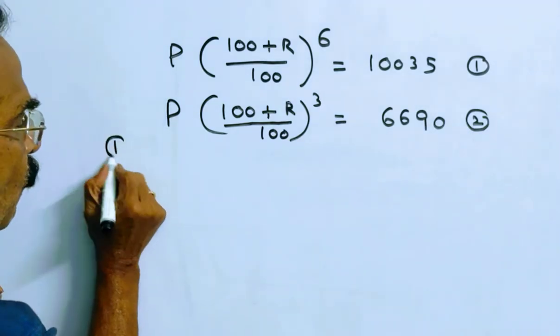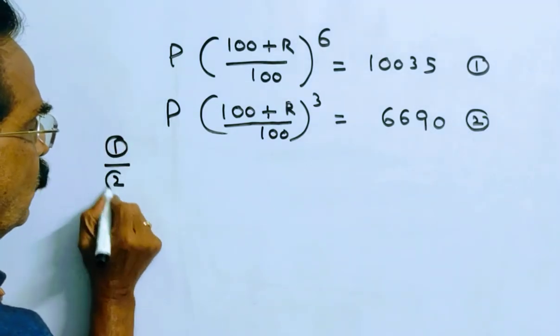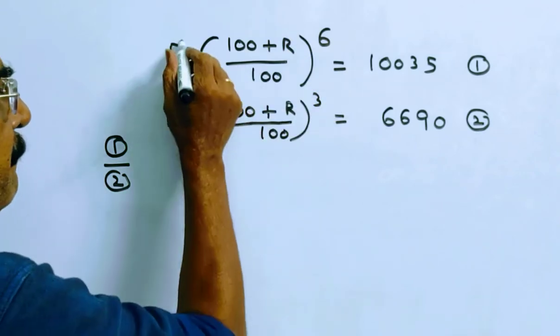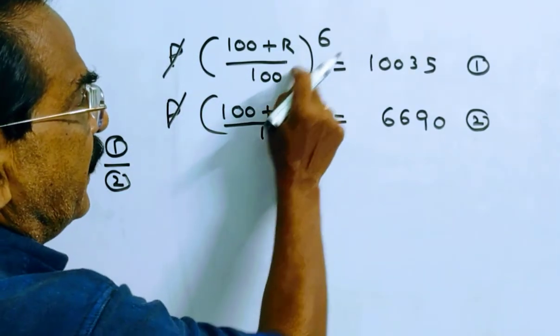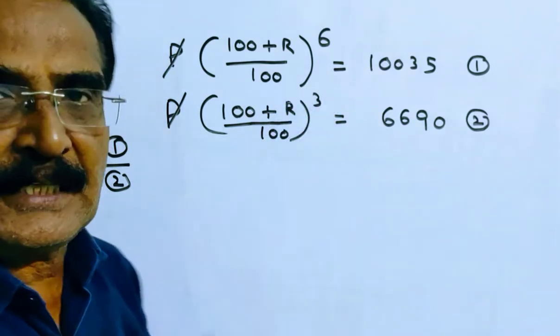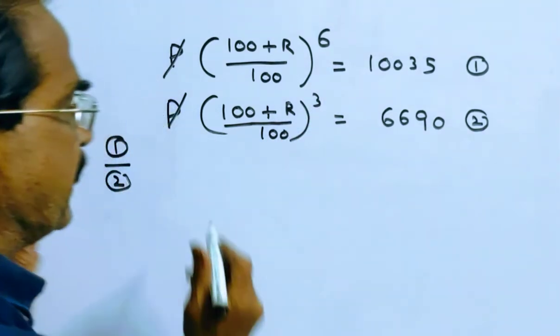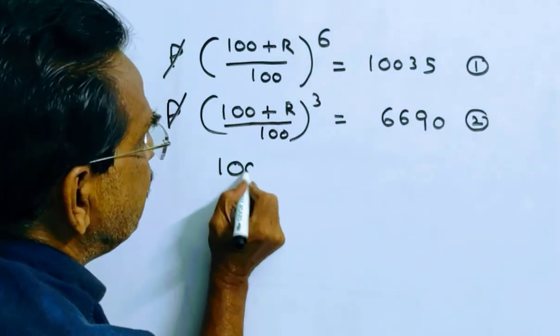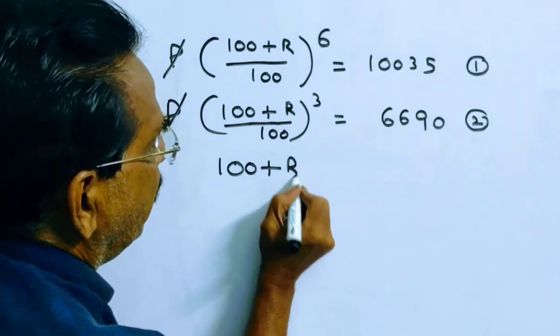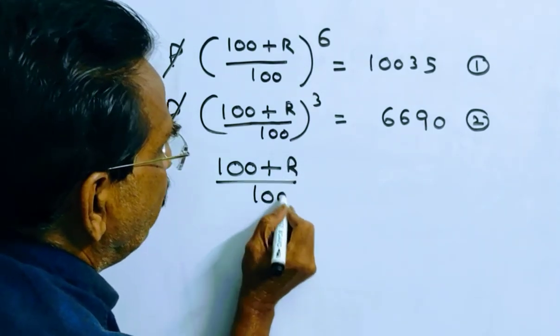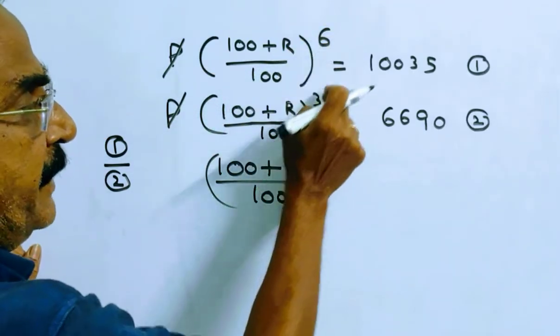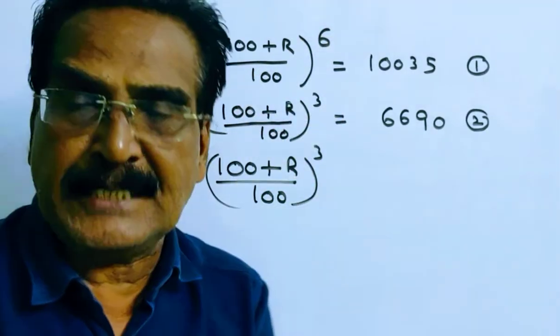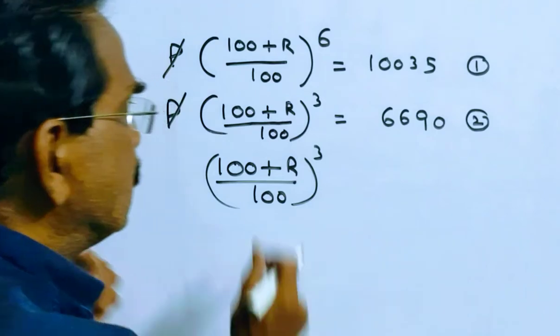Friends, now let us do 1 by 2, this by this. P gets cancelled. 100 plus R by 100 whole power 6 by whole power 3 means whole power 3 remains. So, 100 plus R by 100 whole power 3. x power 6 by x power 3 means x power 3.